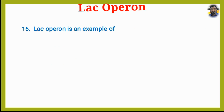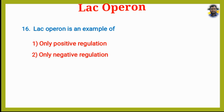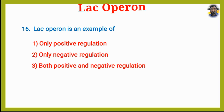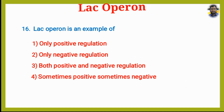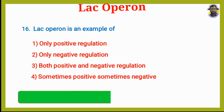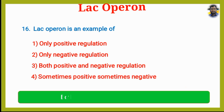The Lac Operon is an example of which type of regulation? Option 1: Only positive regulation. Option 2: Only negative regulation. Option 3: Both positive and negative regulation. Option 4: Sometimes positive, sometimes negative. The answer is Option 3, both positive and negative regulation.